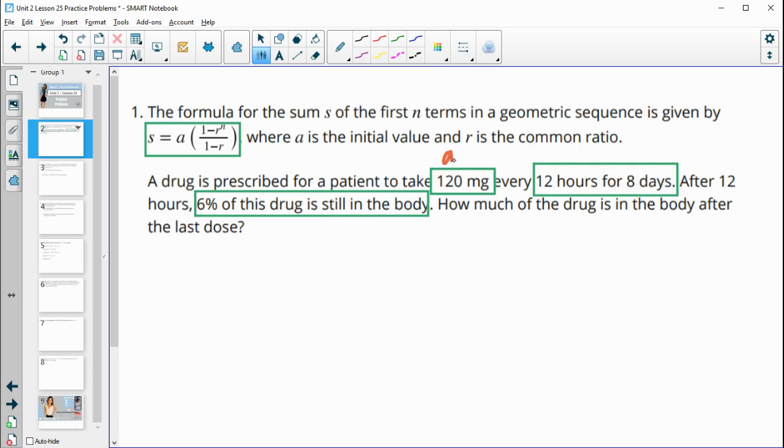So this is the initial amount, 12 hours for eight days. Every 12 hours, so there's 24 hours in a day, so this means that there's going to be 16 doses that this person takes. And then your r is going to be 6% is left in the body after that 12 hours, so your r is going to be 0.06.